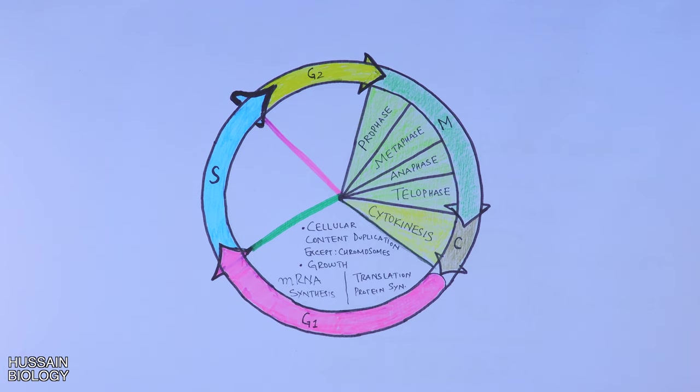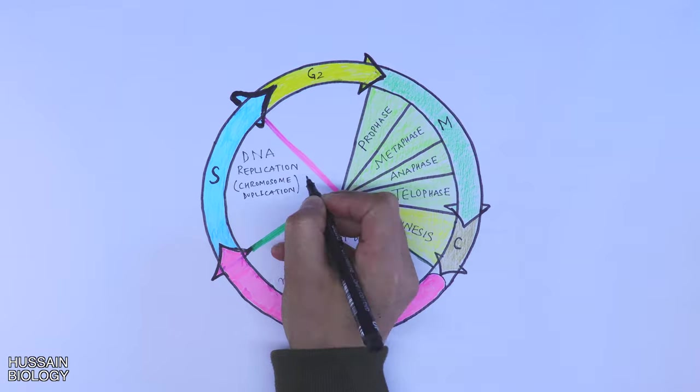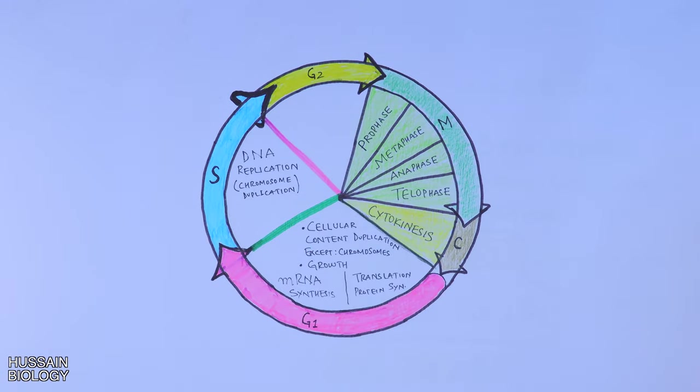Now we are at the S phase—that's the synthesis phase. That means here we get the synthesis of DNA molecules, which means DNA is duplicated here, or we can say DNA replication takes place. Then the cell proceeds into G2 phase.